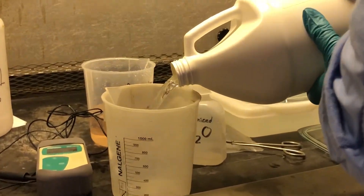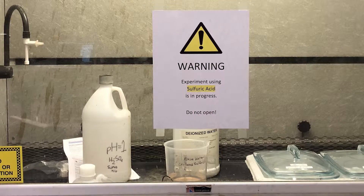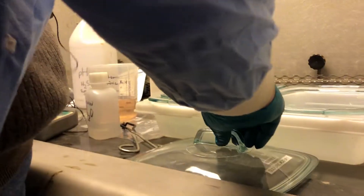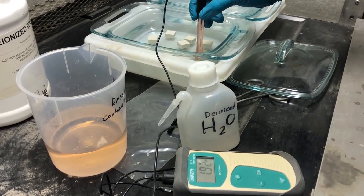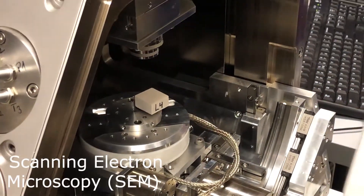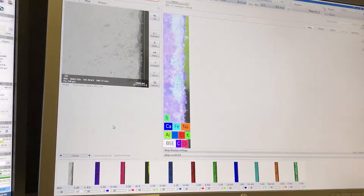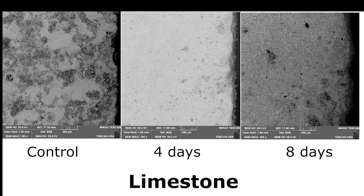We decided to investigate this problem by aging calcium carbonate in a solution of sulfuric acid. We prepared a solution of sulfuric acid at a pH of 1.4 and left our samples in the solution for 4, 8 and 12 days to simulate 40, 80 and 120 years of aging. We recorded the temperature and pH of our solutions every day, then examined our final samples using scanning electron microscopy to record changes in elemental composition, specifically the penetration of sulfur into our marble and limestone samples.